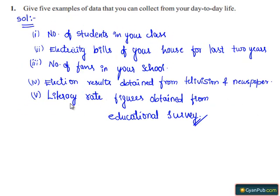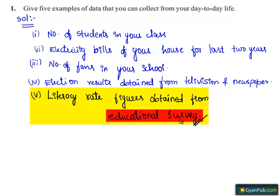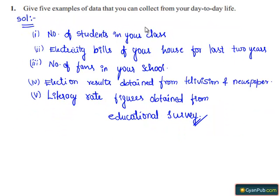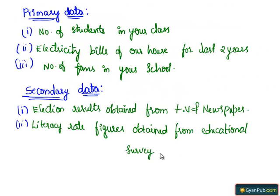The fifth one: literacy rate figures obtained from educational survey. Here, to figure out the literacy rate, we are using an educational survey. Hence, this is also considered as secondary data. From question number 1, examples 1, 2, and 3 are considered as primary data and the 4th and 5th are considered as secondary data.